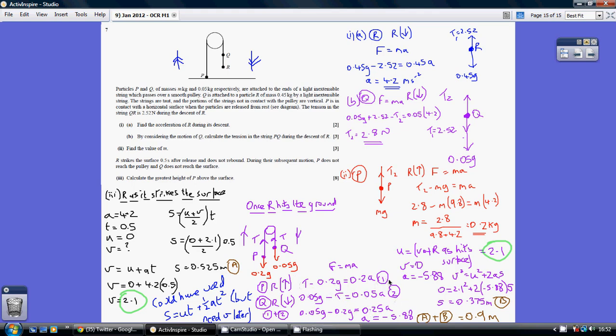So adding 1 and 2 together, on my left-hand side, I'm left with 0.05G take away 0.2G. And on my right-hand side, adding these two together, I get 0.25A. I obviously know that G is 9.8, so this allows me to work out that the deceleration, or the acceleration, is minus 5.88 metres as P is travelling upwards.